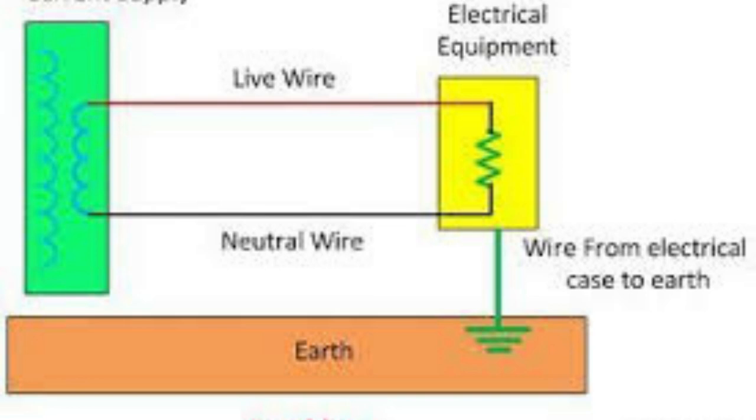Six, the grounding offers the current's return path. Electrical current is discharged to the earth by earthing.